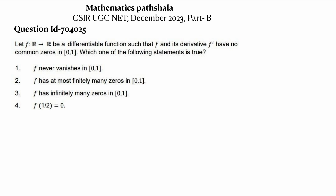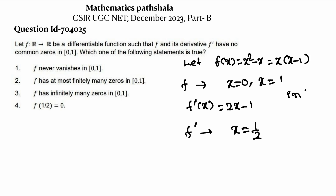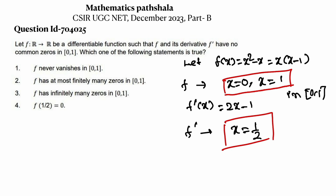We take the example: let f(x) = x² - x, which can be written as x(x-1). So f has zeros at x=0 and x=1. Then f'(x) = 2x - 1, so f' has a zero at x = 1/2. We can see that f has zeros at x=0 and 1 in the closed interval [0,1], and f' has a zero at x=1/2 in [0,1], so f and f' have no common zeros. Therefore the given conditions are satisfied.